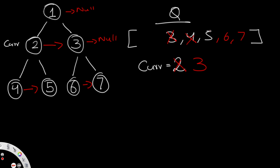So what's the problem? Five is pointing to none, but five should be pointing to six. We didn't have any condition to handle that cross-subtree connection. So now I'm going to introduce a new condition so that five ends up pointing to six.